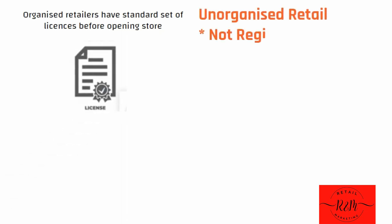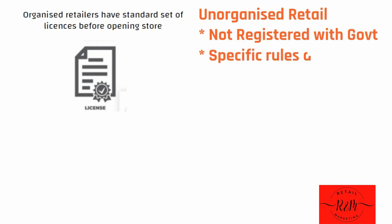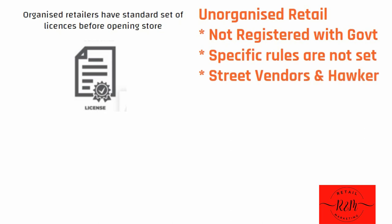On the other hand, the unorganized retail industry is not registered with any government authority — that is, no government rules and regulations are followed in the unorganized retail sector. Examples of unorganized retailers are local shops, street hawkers, street vendors, and unauthorized small shops present on various streets in a city or town.